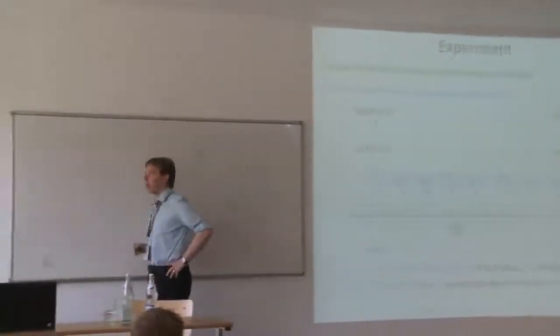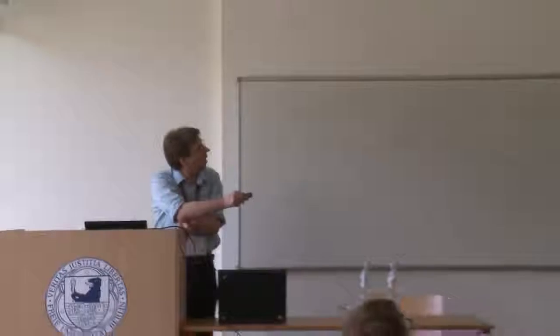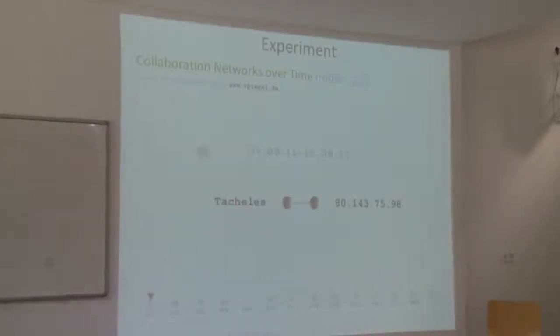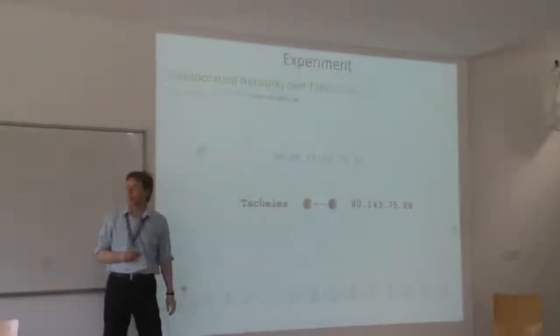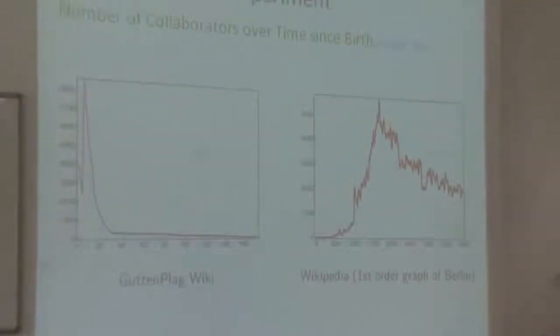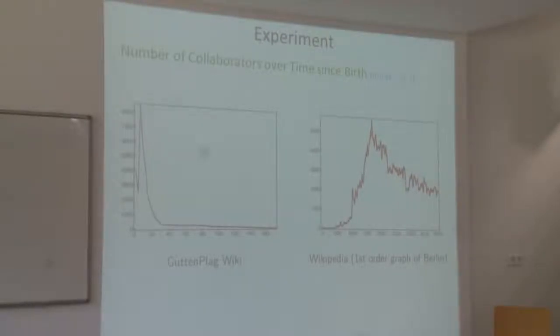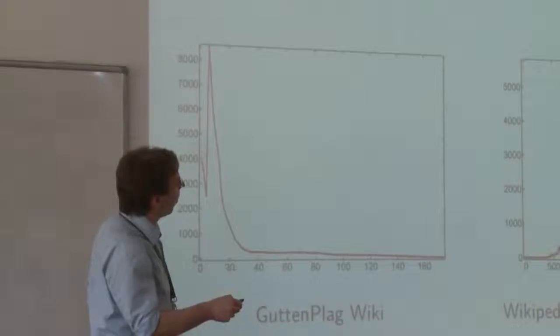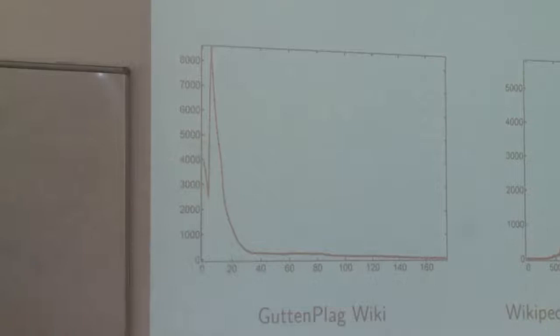We applied this to the Gutenplag wiki. What you see is a picture of the order of those networks — the number of collaborators. We start at the time of the settlement of the Gutenplag wiki. There are many people online in a window of three days shifted one day at a time. Then gradually fewer and fewer people collaborate until we reach the last snapshot in which only two persons collaborated. We can also compare the number of collaborators in a 30-day window in the Gutenplag wiki to those in Wikipedia based on an extract starting from the seed article Berlin.